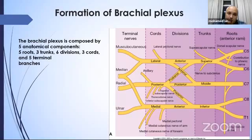The brachial plexus is composed of five components: five roots, three trunks, six divisions, three cords, and five terminal branches.